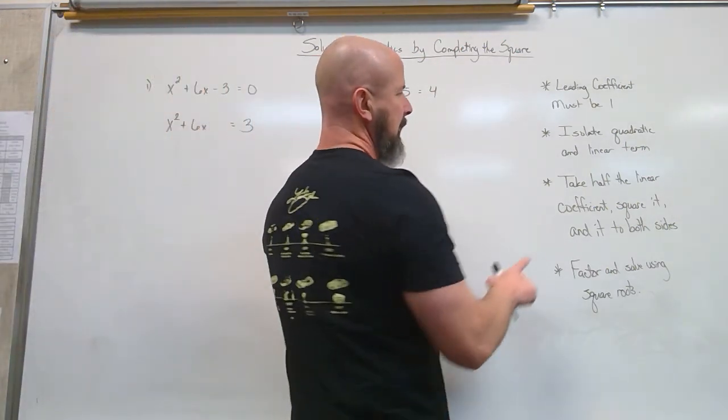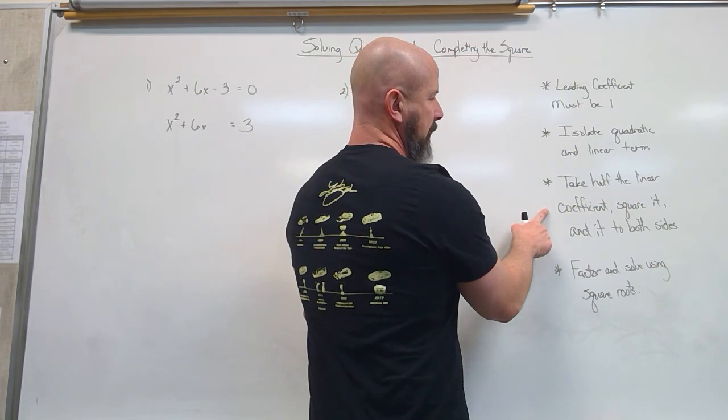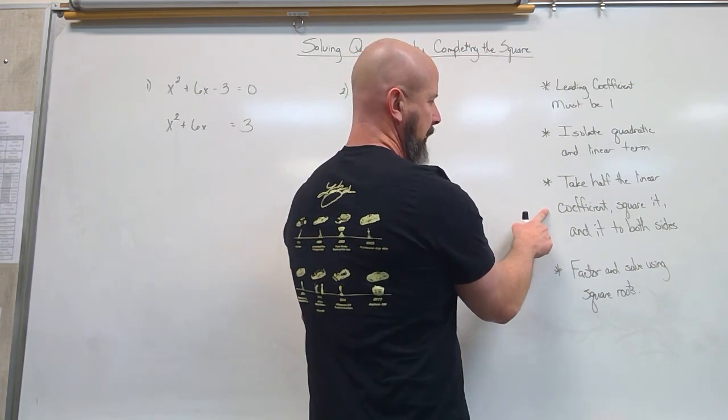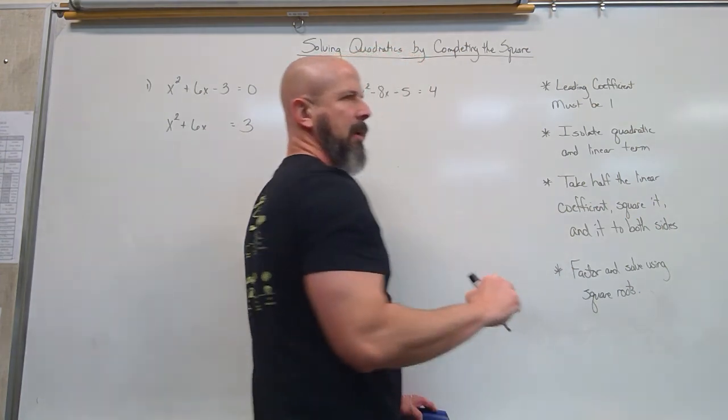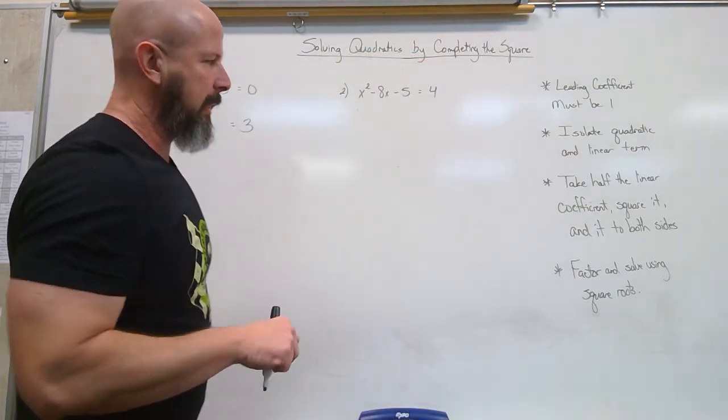Now our process. Take half the linear coefficient, square it, add it to both sides. We're going to look at the linear coefficient. Take half, square it, add it.